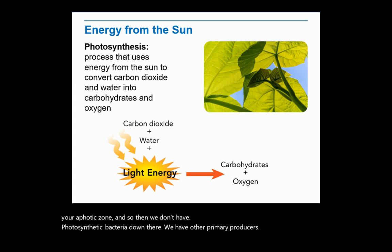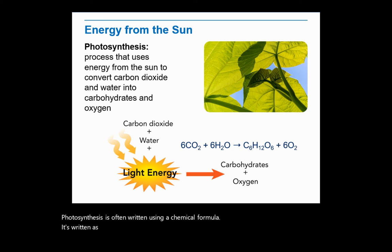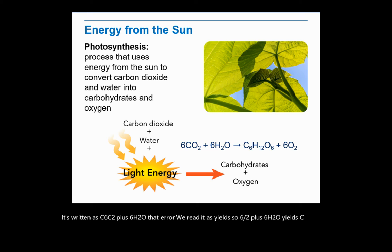Photosynthesis is often written using a chemical formula. It's written as 6CO₂ plus 6H₂O yields C₆H₁₂O₆ plus 6O₂.